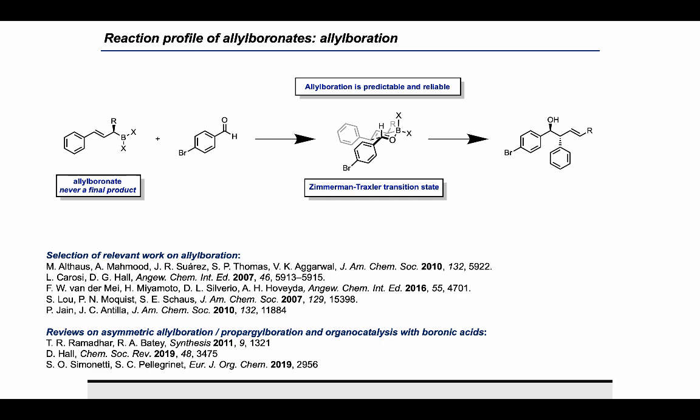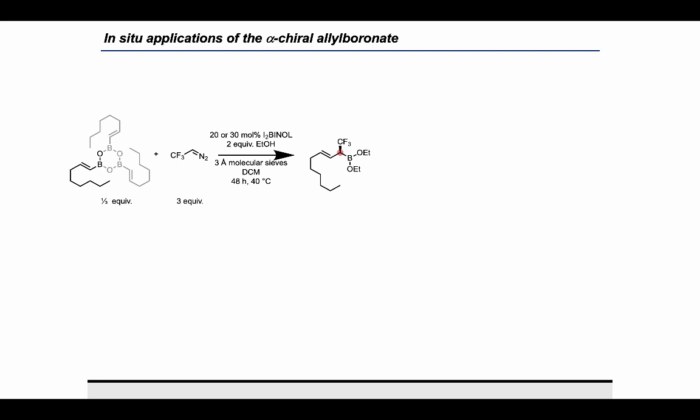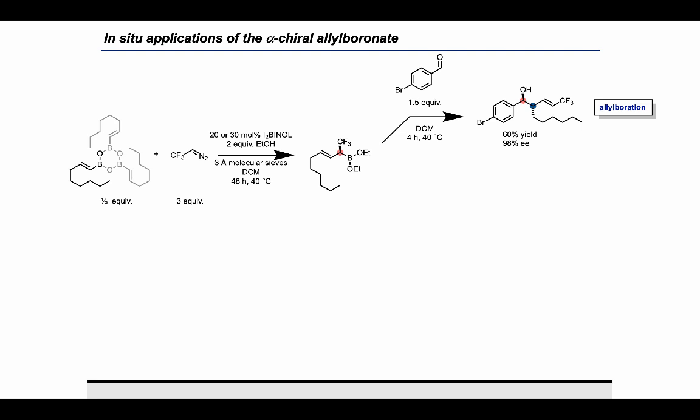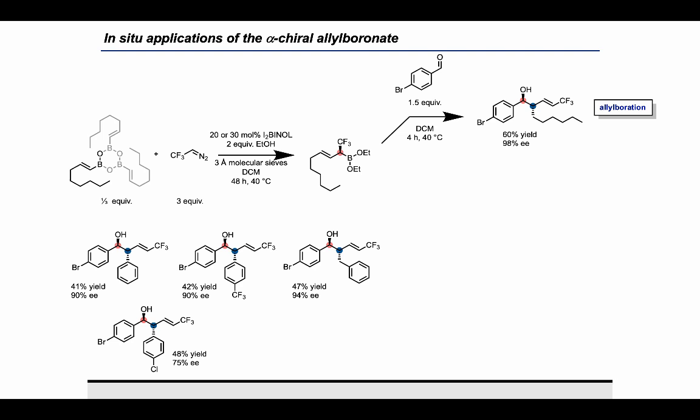Now I would like to show you some of the in-situ applications we were able to develop for our alpha-chiral alloboronates. This is a one-pot reaction where the first part is the same asymmetric homologation. Then we use an argon flow to evaporate any leftover diazoethane, and we add 1.5 equivalents of 4-bromobenzaldehyde to obtain this homoallylic alcohol. We were able to do the same alloboration for some of the other alloboronates that we can make. However, when we added a ketone instead of an aldehyde, the alloboration did not work.